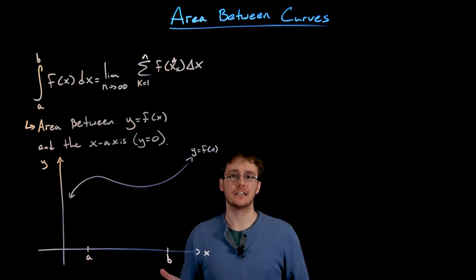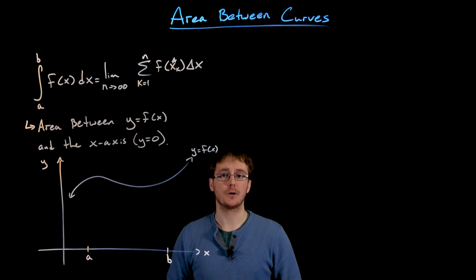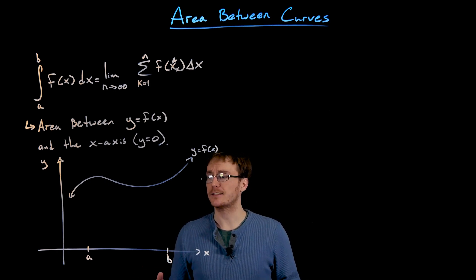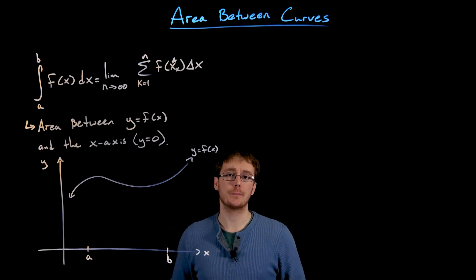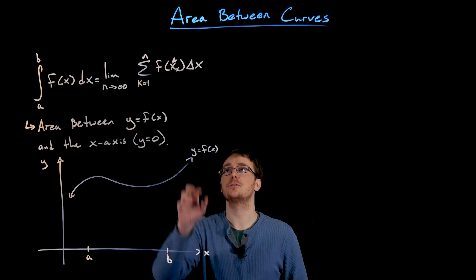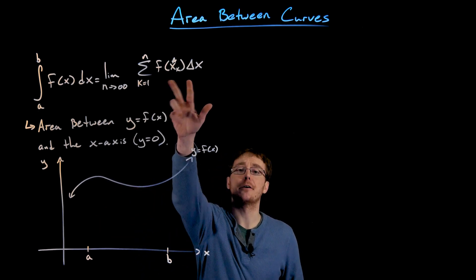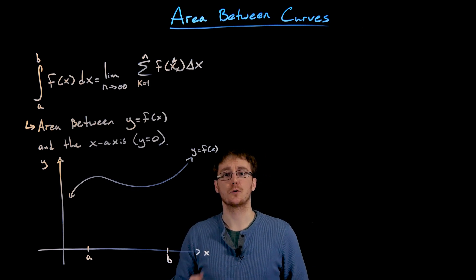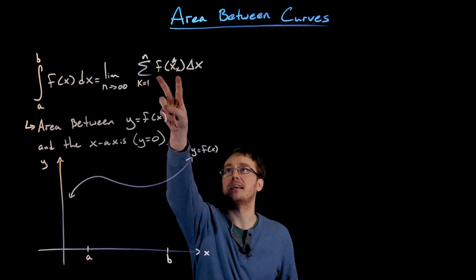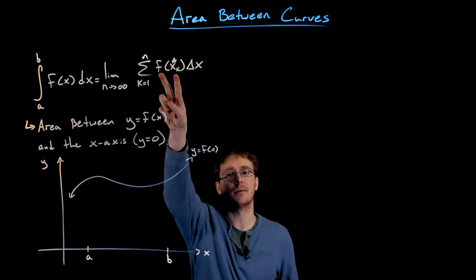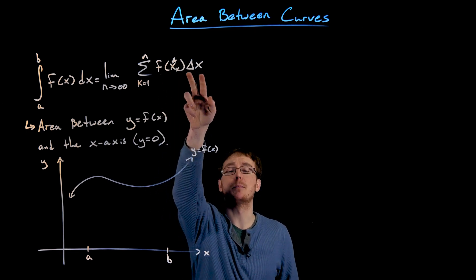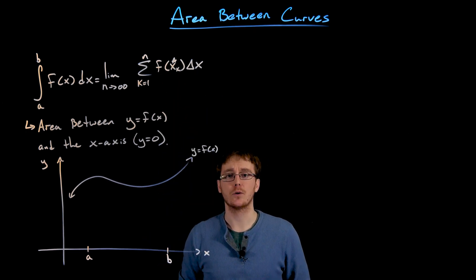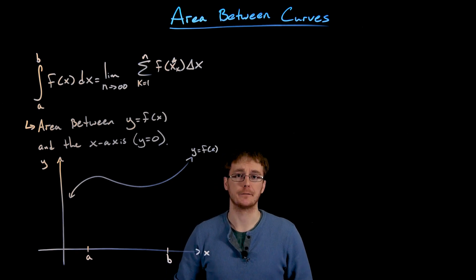Remember we define the definite integral using the limit of a Riemann sum. Basically what was going on behind the scenes was we take our region of interest, slice it up into a bunch of sub-regions, and approximate the area of each of those sub-regions with a little rectangle. The height of our rectangle is given by the value of our function at some sample point, and we multiply that by the width of each rectangle, which is that delta x quantity.